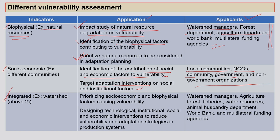Integrated indicators help prioritize both socio-economic and biophysical factors causing vulnerability. They support sustainability and help in designing technological, institutional, social, and economic interventions to reduce vulnerability and inform adaptation strategies in production systems. Applicants include watershed managers, agriculture, forest, and fisheries departments, water resource and animal husbandry departments, and multilateral funding agencies.